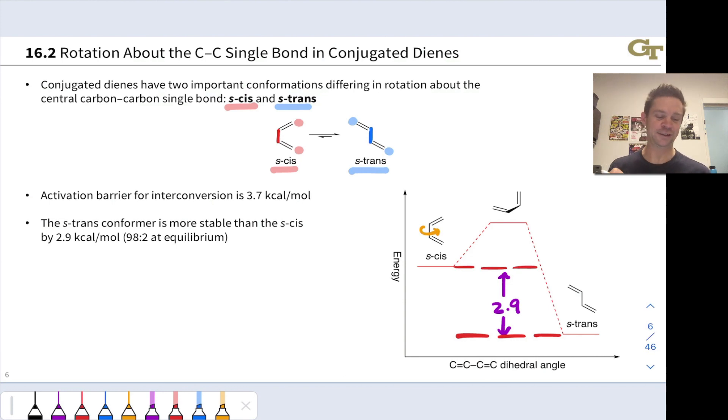The activation barrier for the interconversion between the S-cis and S-trans conformers is 3.7 kilocalories per mole. This is actually a little bit curious if we think about it.